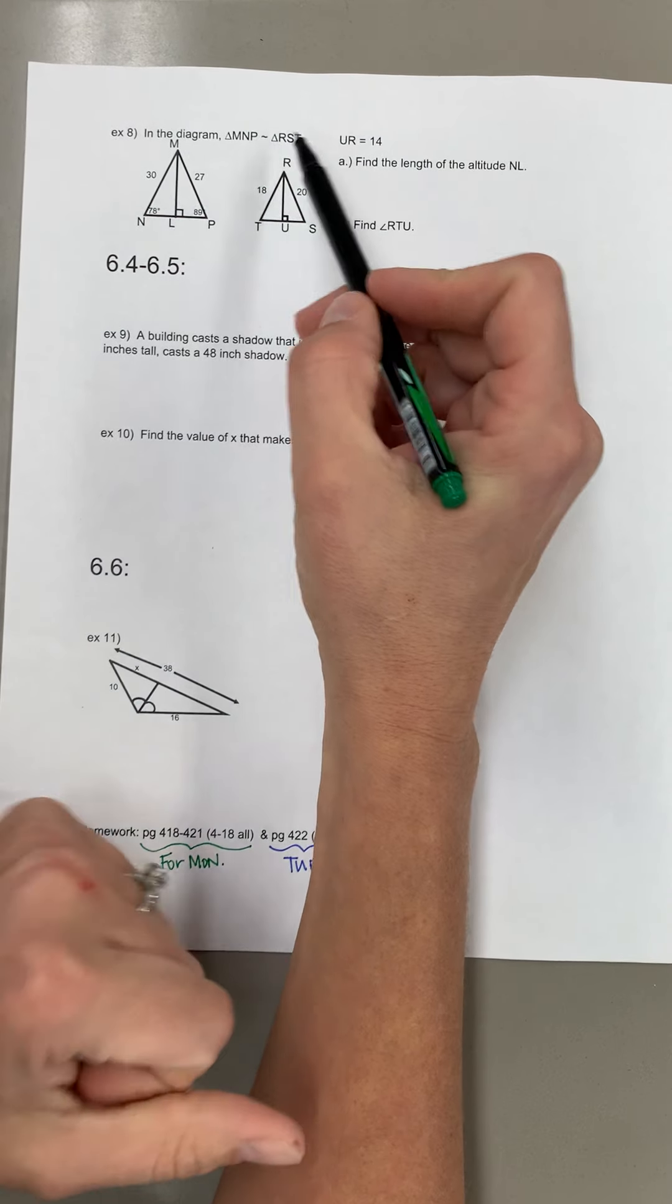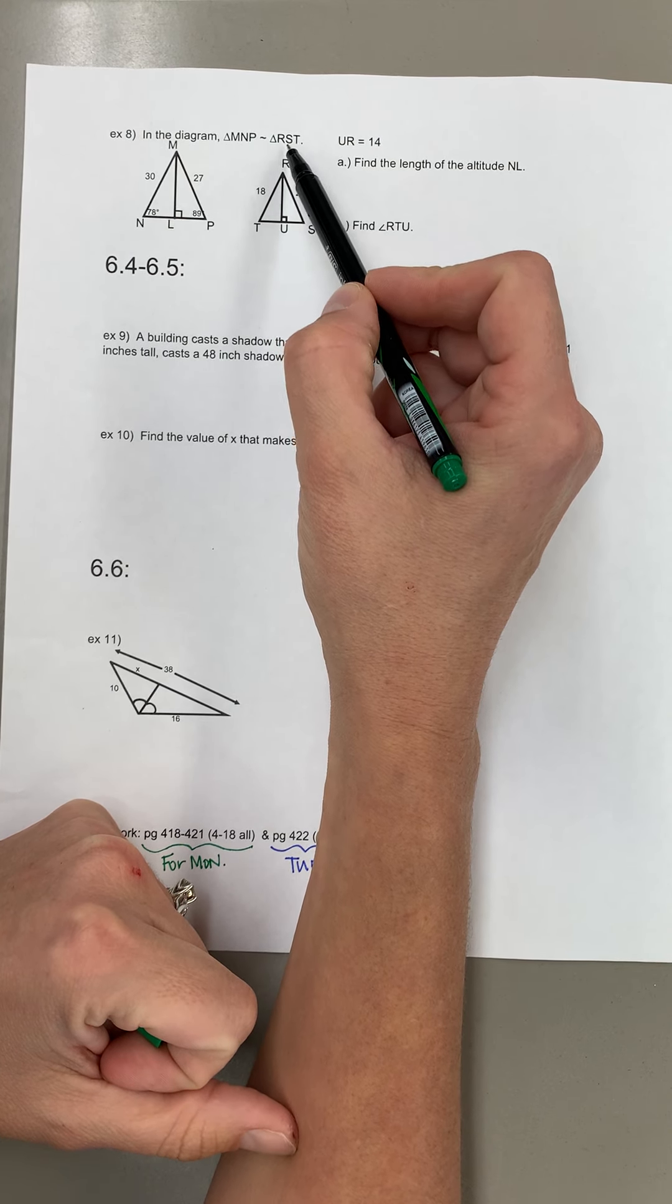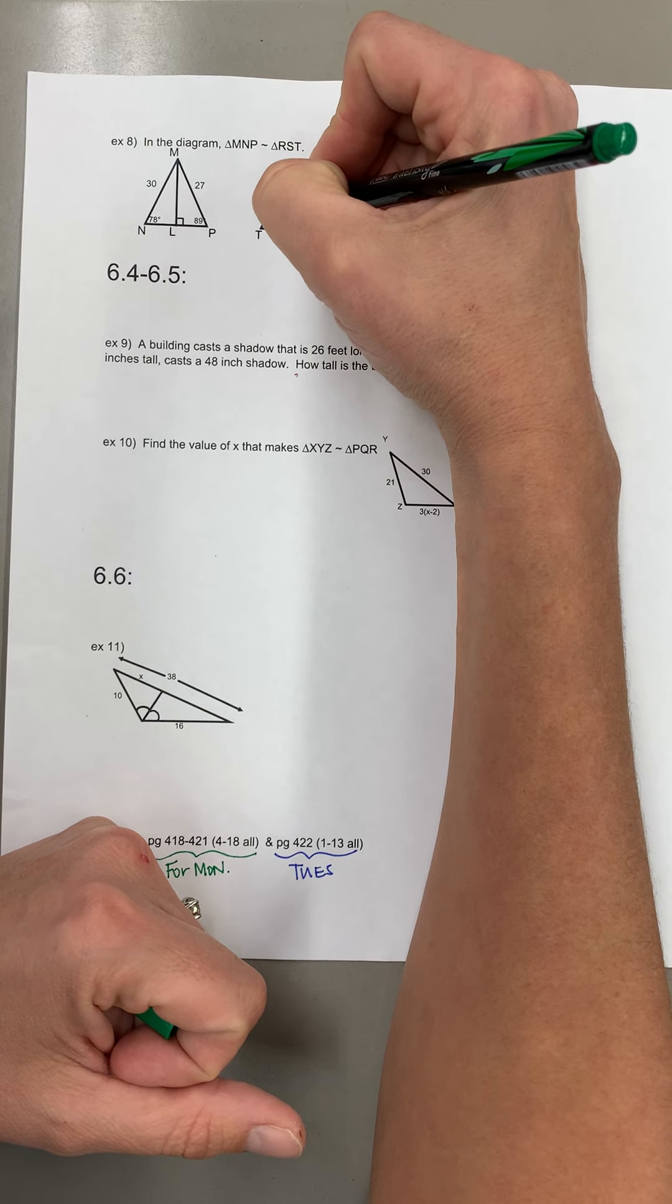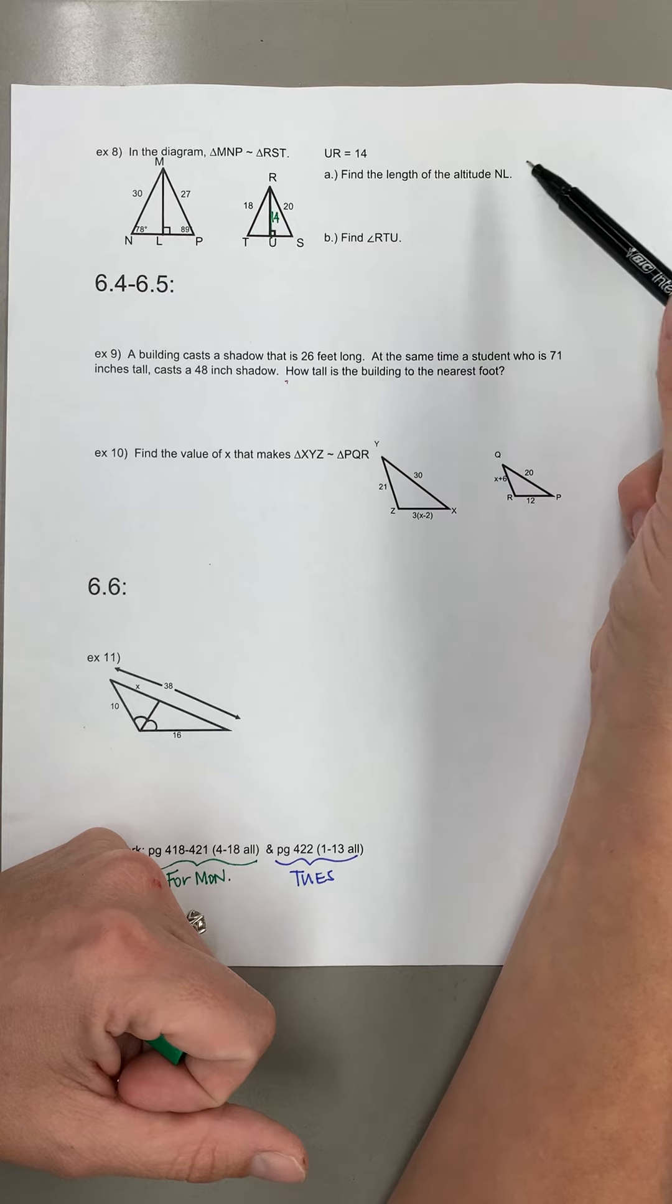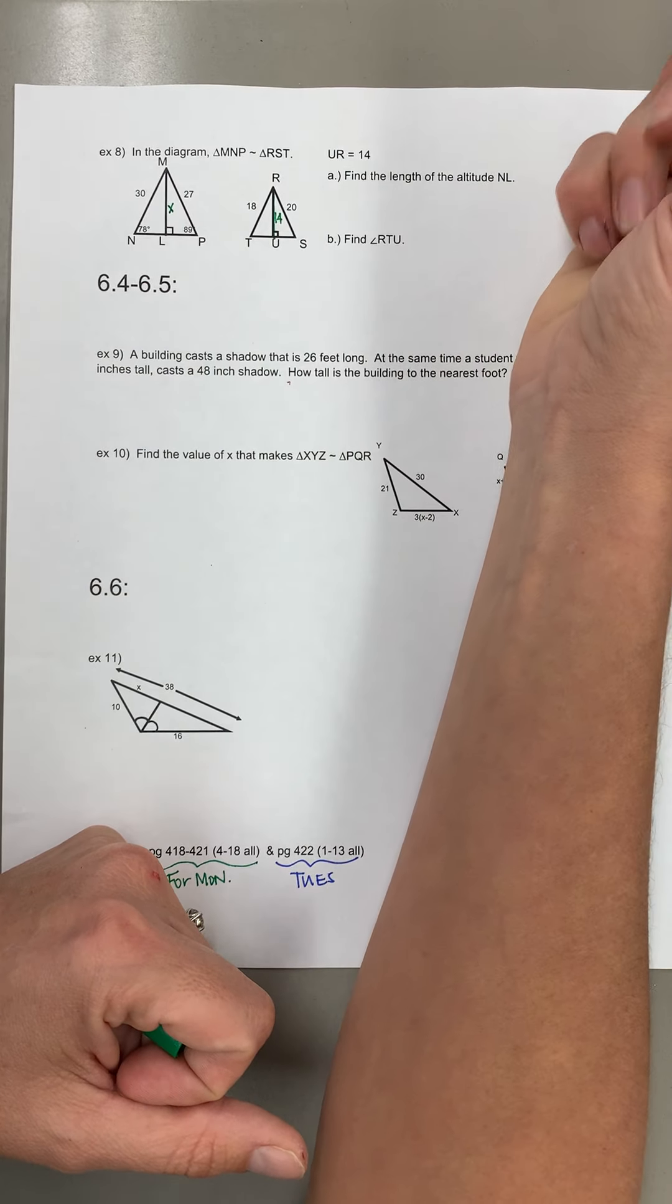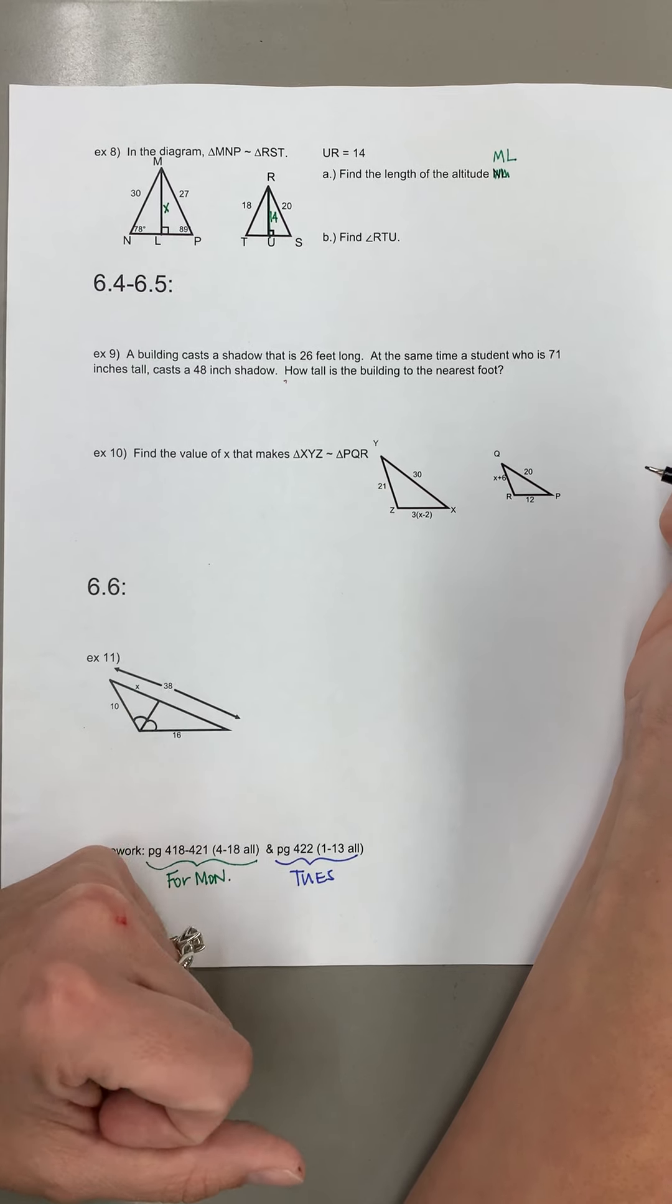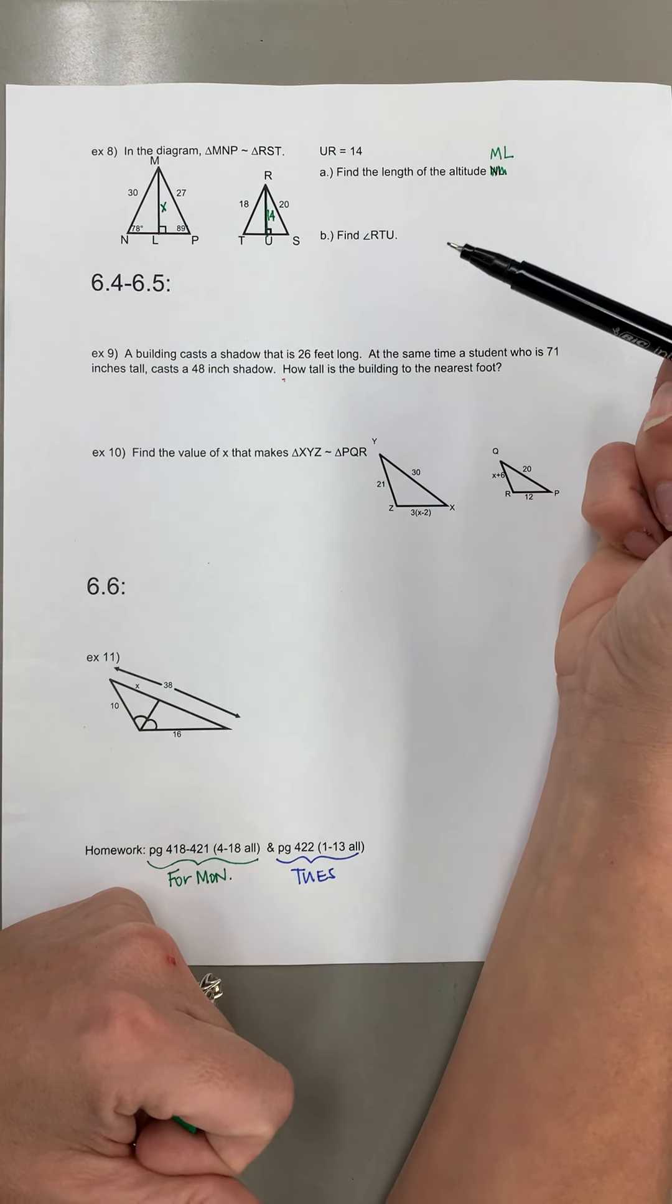So they tell us MNP is similar to RST. They tell us UR is 14 which is this altitude here. It's kind of hard to mark 14 there and they want the length of the altitude over here which is gonna be I'm gonna call X, which really should be ML, sorry NL is not the altitude. So just like sides are proportional the altitudes are as well.